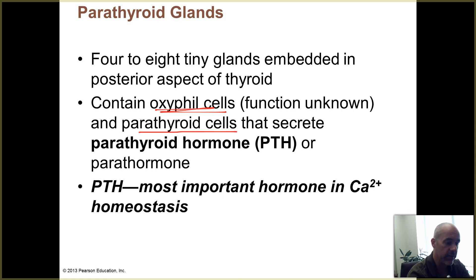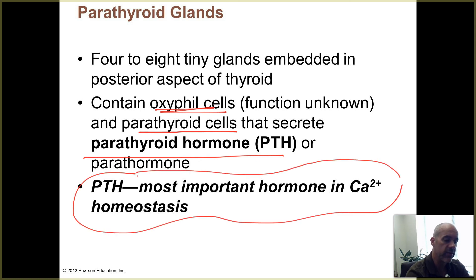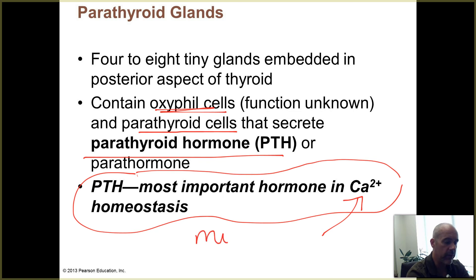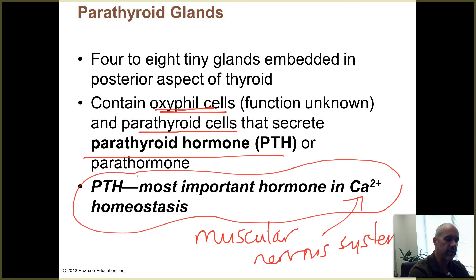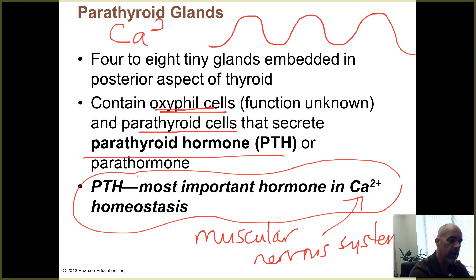The other cells are called parathyroid cells, and they make PTH or parathyroid hormone. As you learn when you study the skeletal system, this is the most important hormone in calcium ion homeostasis. Calcium levels are very critical for muscular and nervous system functions. Calcium ions play roles in the functions of probably every cell in your body, but we especially think of the muscular and nervous systems when considering calcium's importance.